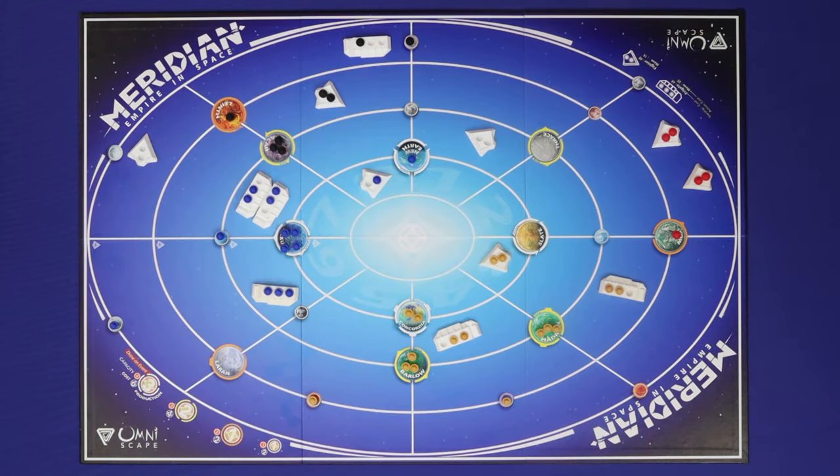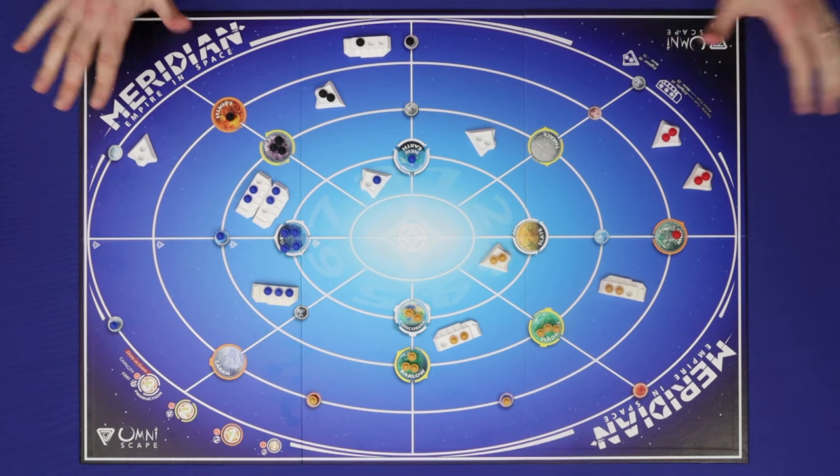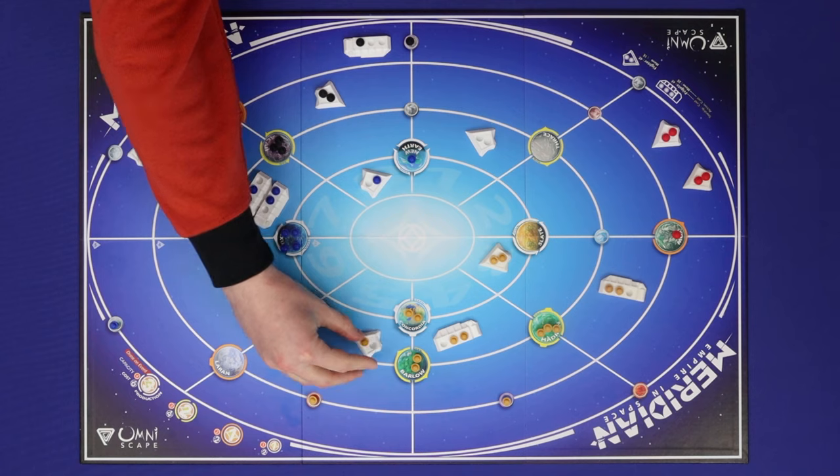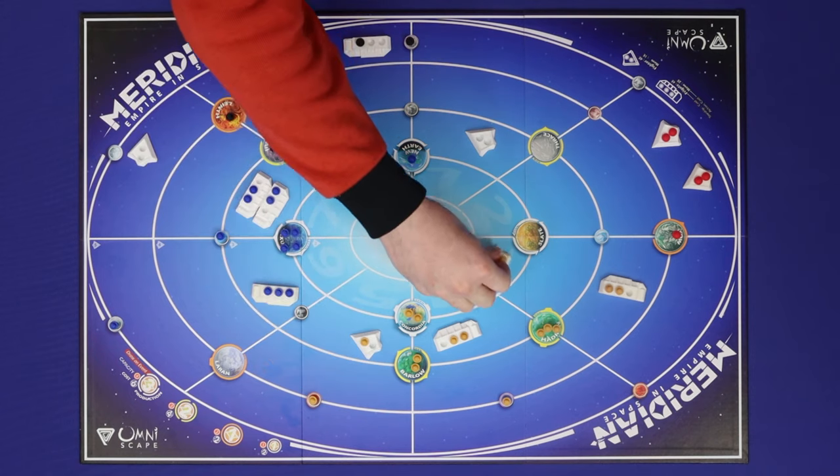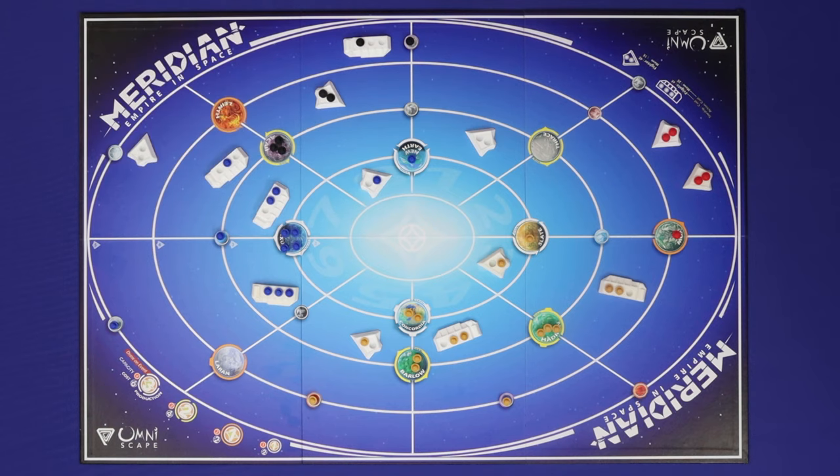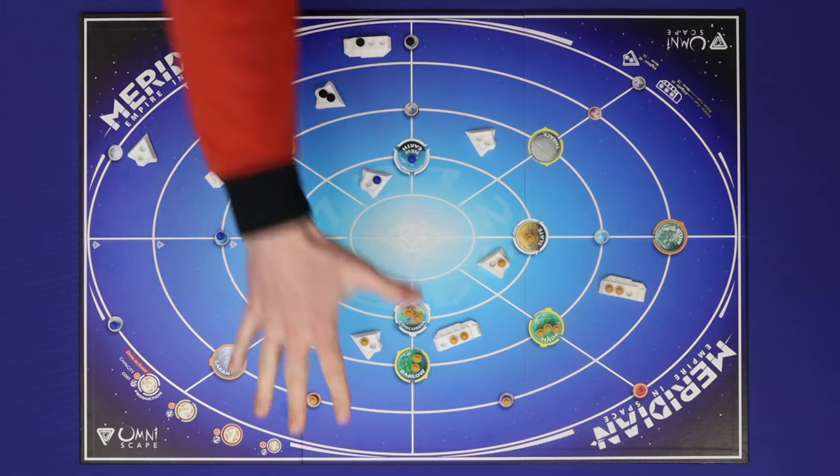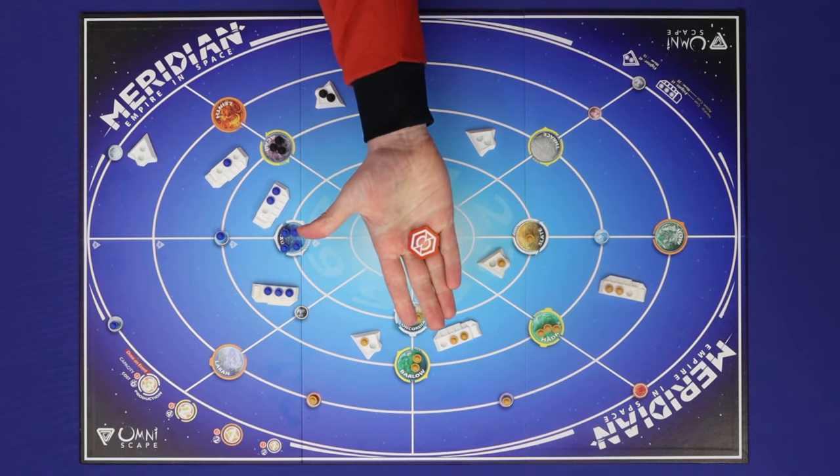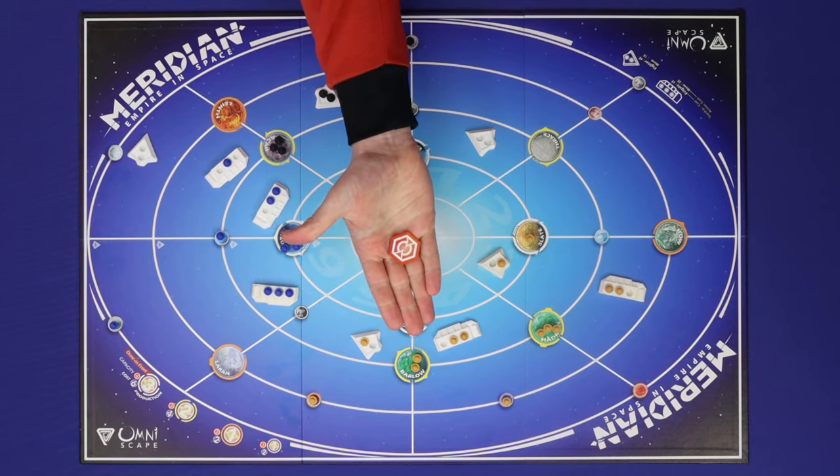Empire in Space is a 2-4 player light 4X game set in the Meridian star system. Players will construct and load their starships, colonize new moons and planets, and battle each other for supremacy. The game end is triggered when the entire star system is colonized, when one empire is eliminated, or when a player has established a presence in all eight sectors of the board. This triggers a final and decisive round in which players will compete for victory tokens, and the player with the most victory tokens at the end of that round is the winner.